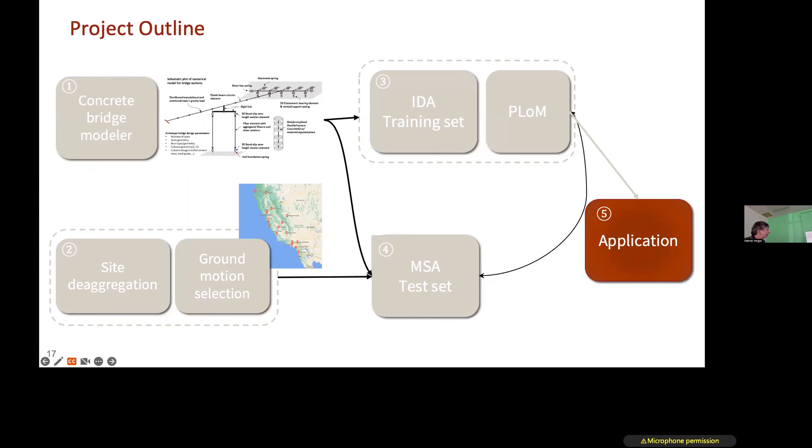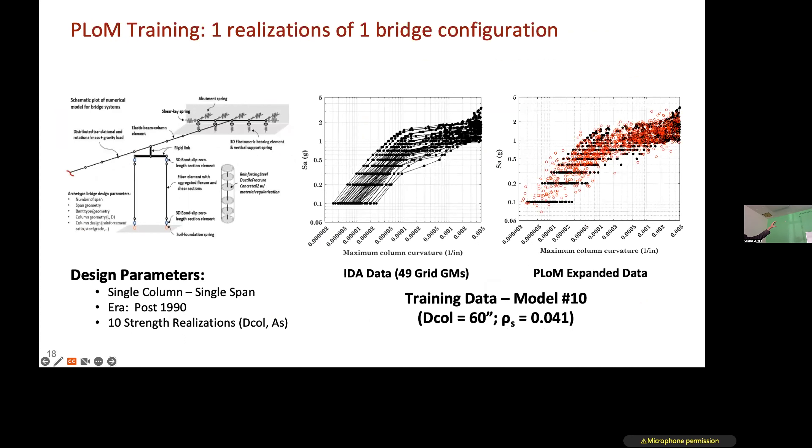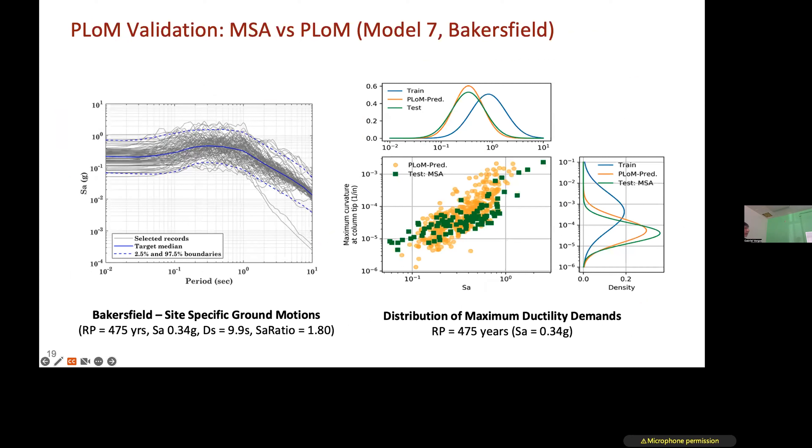We started applying this PLoM model to looking at bridges coming from different bridge properties, different site effects, and we're doing validation of the IDA analysis using the PLoM model versus the multi-stripe analysis. In terms of bridge modelers, we're looking at archetype bridges that could have different numbers of spans, different numbers of column bends, different design areas, and from the design areas different parameters in terms of the strength, the ties, and the size of rebar. You can have 600 samples of different bridges with these parameters, and we would train the surrogate model over that space. We took one bridge archetype, one configuration. We did an IDA analysis, the graphic shown in the middle. The PLoM model takes that IDA data, the training data, and statistically sprinkles more data in between it. We've put that bridge in Bakersfield, taken a set of ground motions for multi-stripe analysis, and we're getting good agreement.